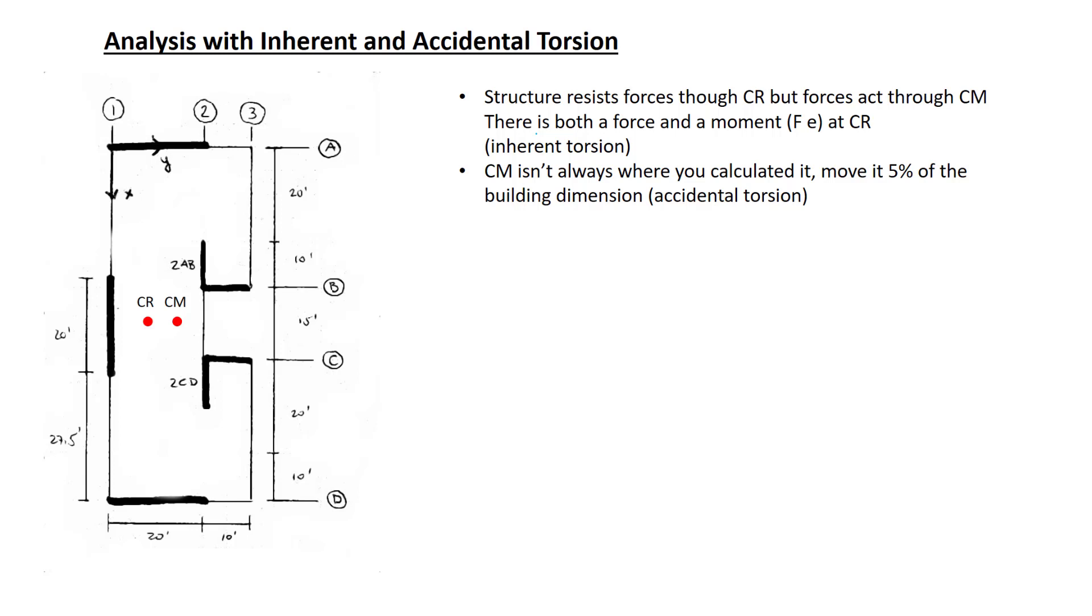Let's see how this plays out in this example. I'm showing here the accidental eccentricity. That is how far away from the center of mass is the force actually applied. The eccentricity shown as EX is a little bit larger than the eccentricity shown as EY because the building dimension in the x-direction is larger than the building dimension in the y-direction.